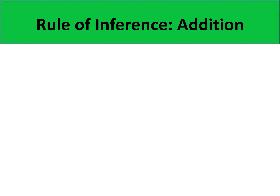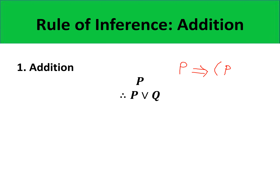The first rule of inference is addition. Its form is P, therefore P or Q. It only has one premise. Since this is known to be valid, we are sure that its propositional form — P implies the quantity of P or Q — is a tautology.